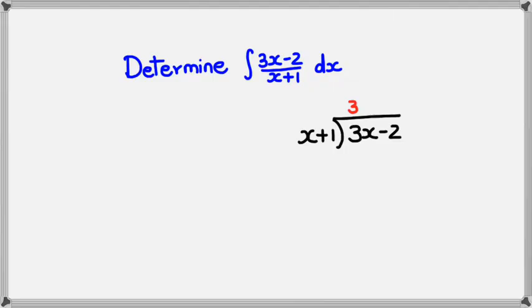I know that I've got to multiply x plus 1 with 3 to get 3x plus 3. And if I subtract it, what I'll have is 3x minus 3x is 0, negative 2 minus 3 is negative 5.